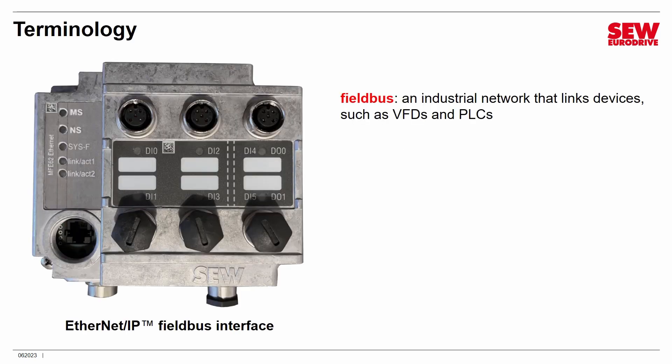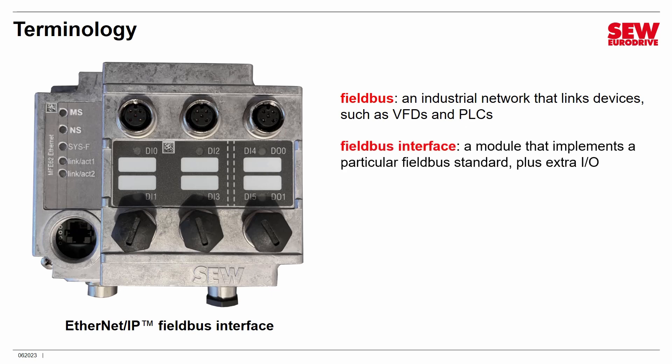First, let me define a few terms. A field bus is an industrial network that links devices such as VFDs and PLCs together. The PLC acts as the controller, and the VFDs are controlled devices. The field bus is sort of the glue that connects everything together. Closely tied to that is the term field bus interface — this particular one shown here is an Ethernet IP field bus interface, a module that implements a particular field bus standard.